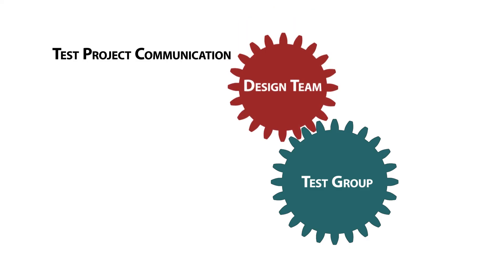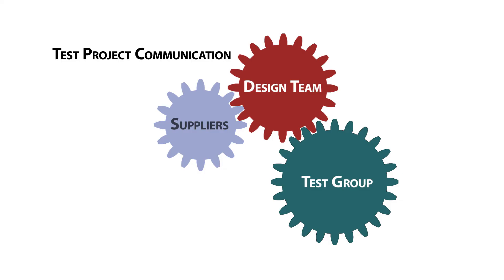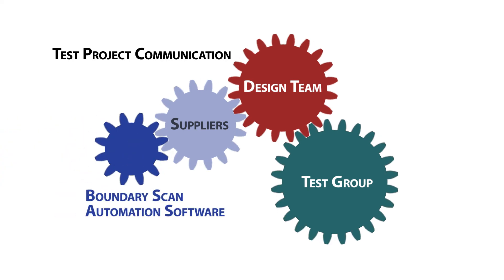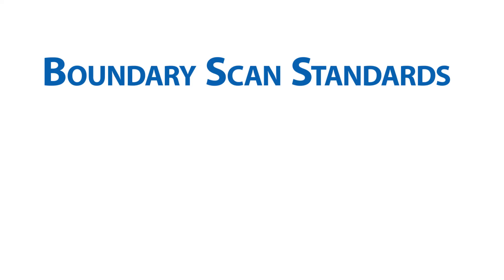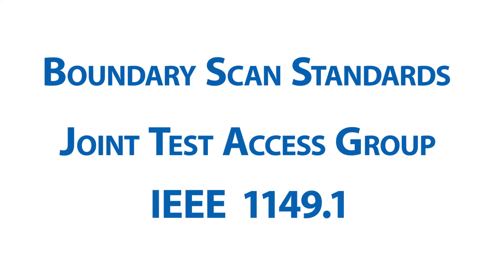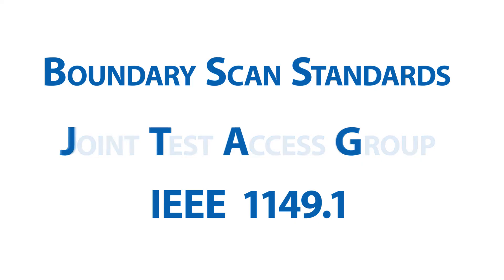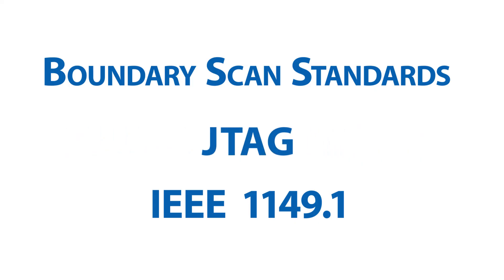A critical issue with boundary scan implementation is coordination between organizations. When the test department decides to utilize boundary scan, they need to work with the board developers to add it to the design. IC manufacturers need to have boundary scan registers built into the devices they provide. Someone also needs to provide software tools that can gather information from these different sources and create a program. To facilitate information exchange between these organizations, a standard has been developed for boundary scan. Established in 1990 by a team of industry representatives called the Joint Test Access Group, it became the IEEE 1149.1 standard, often referred to simply as JTAG. JTAG is especially important to IC manufacturers because it enables them to provide a consistent boundary scan configuration that's readily usable by many different customers in a variety of applications.